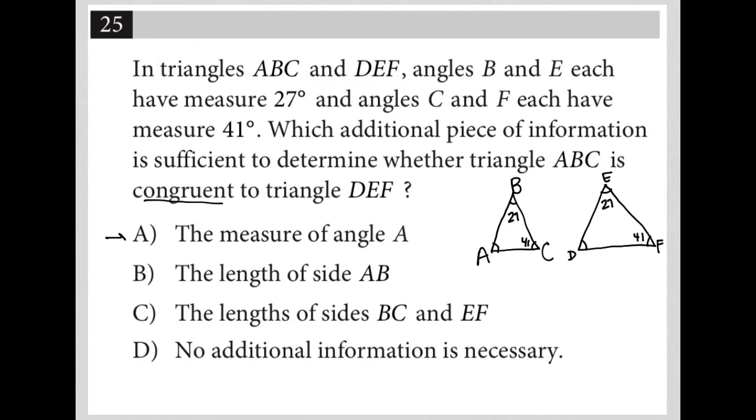So let's see, choice A says the measure of angle A. No, I don't think so. Like if we have the measure of angle A, that would tell us at minimum the two triangles are similar, but it would not tell us whether or not the two triangles are congruent. So that would not be sufficient.